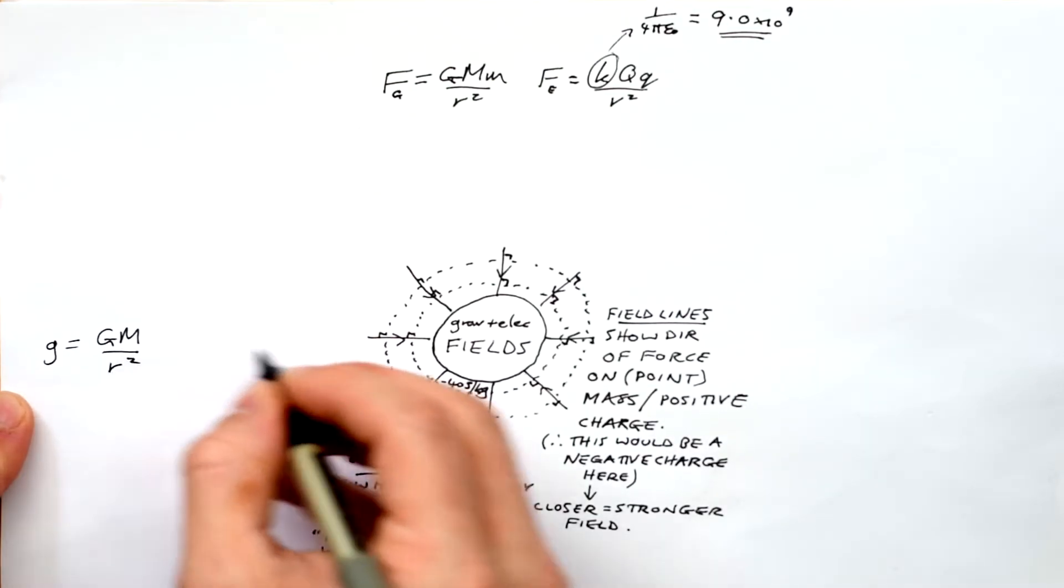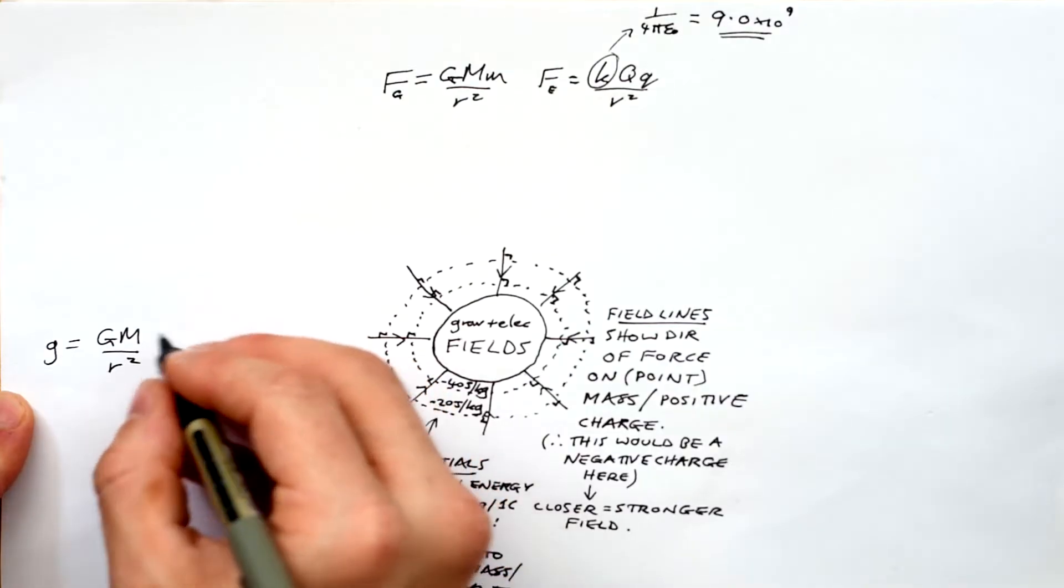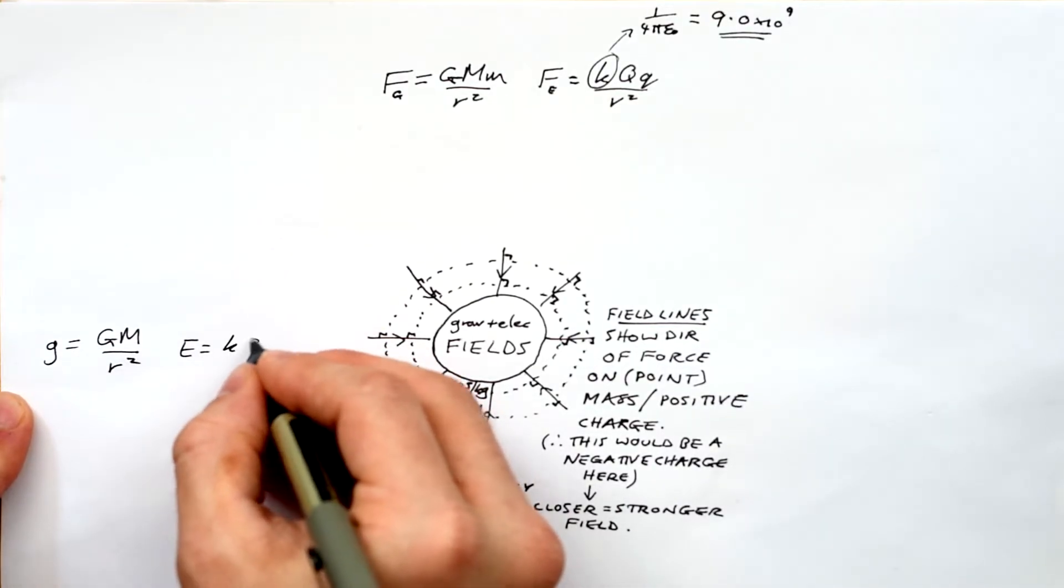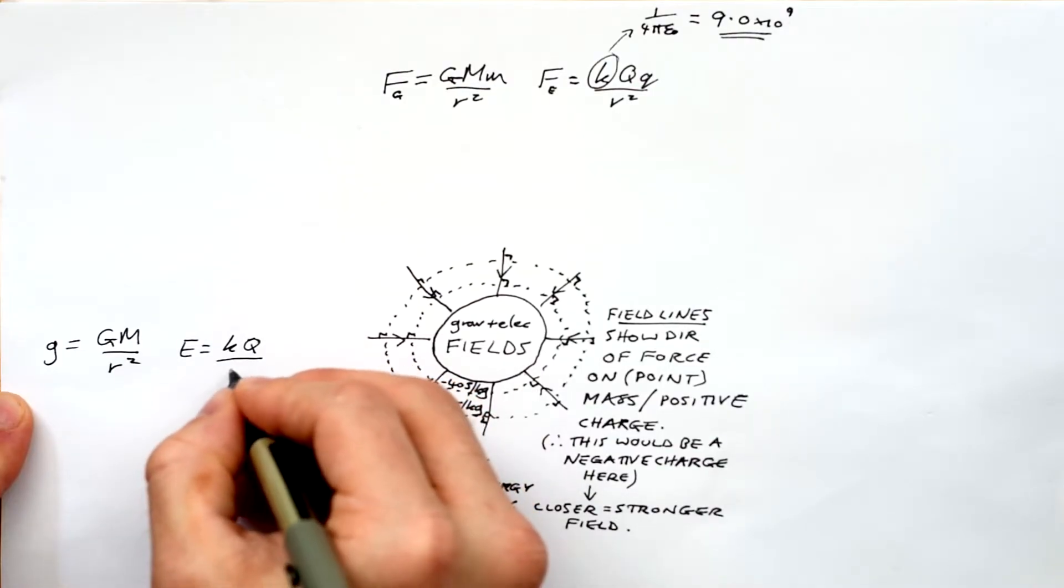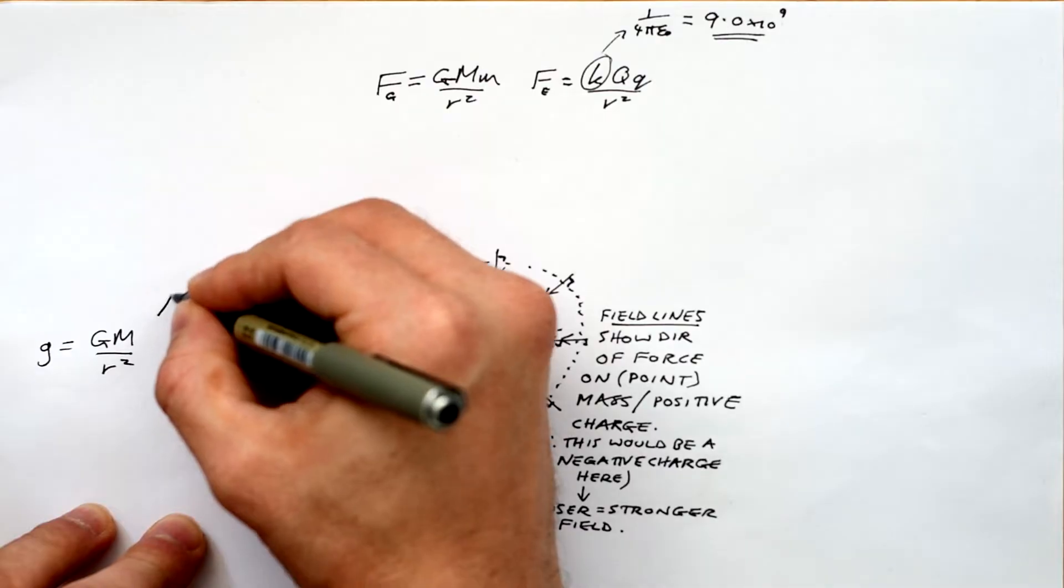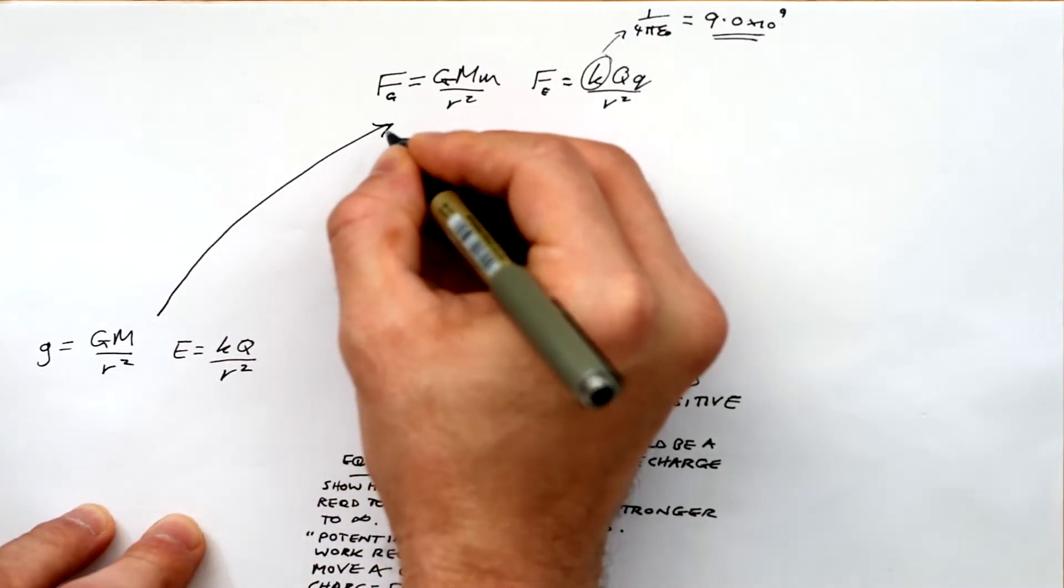Okay, field strength g is equal to GM over r squared. Very similar to force, we're just missing one of the masses. Similarly for electric field strength, E equals kQ over r squared. So the unit of this is going to be newtons per kilogram or newtons per coulomb.